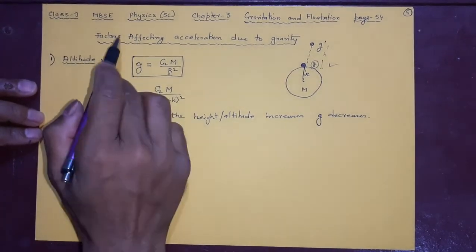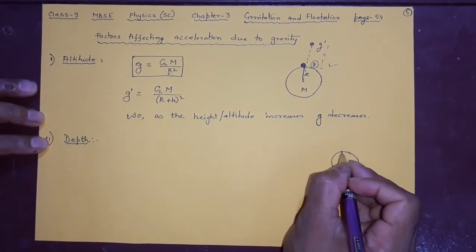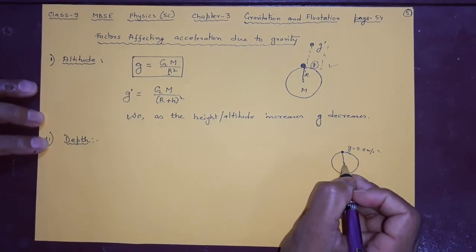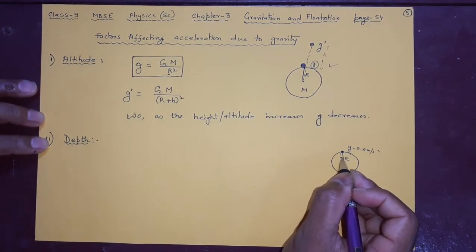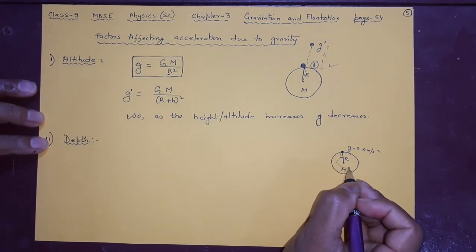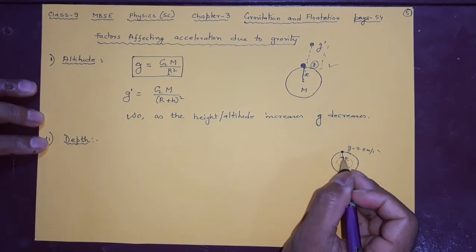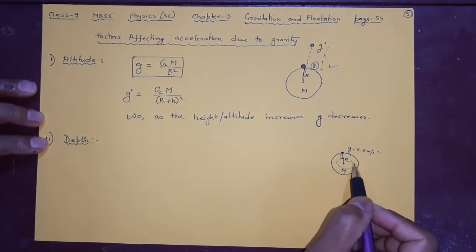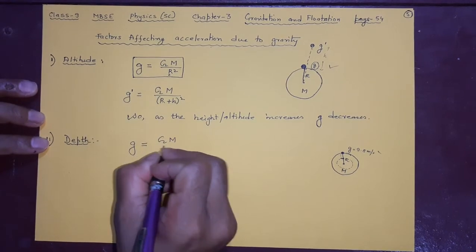The second factor is depth. Depth also affects acceleration due to gravity. Suppose you are standing on the earth's surface where g = 9.8 m/s². The earth has radius r and mass m. But if you go inside the earth and try to measure g, from that point the effective mass will be very less — only the mass up to that inner radius is considered, not the outer mass.